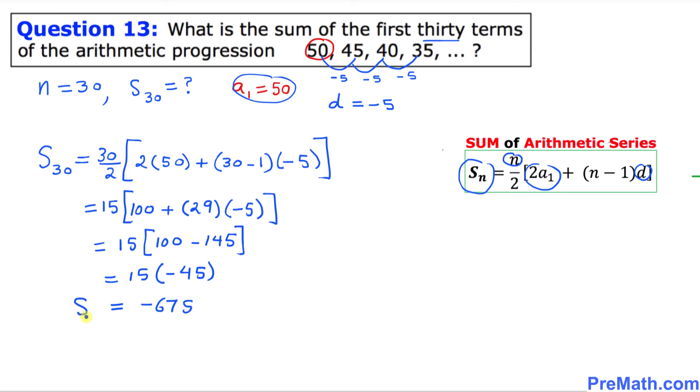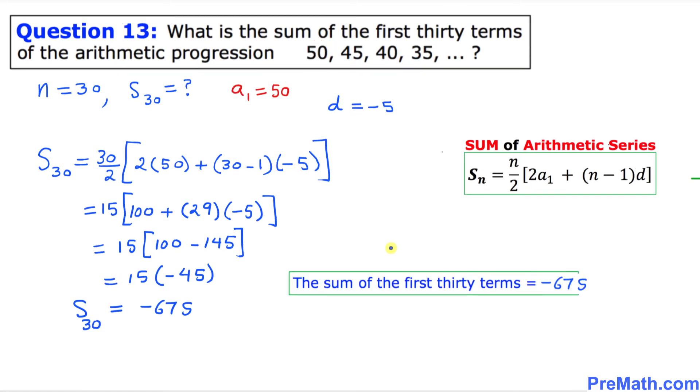That is the sum of our 30 terms. So thus, our answer turns out to be the sum of first 30 terms is negative 675, and that is our answer.